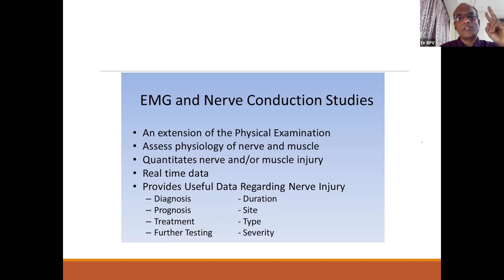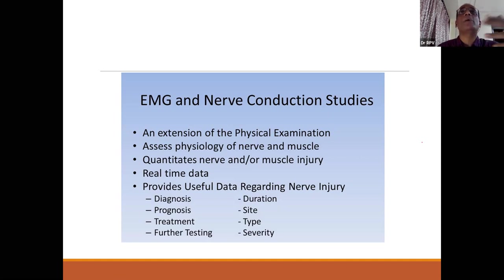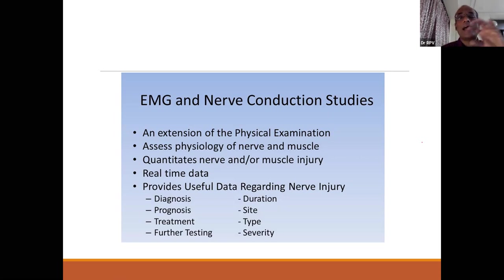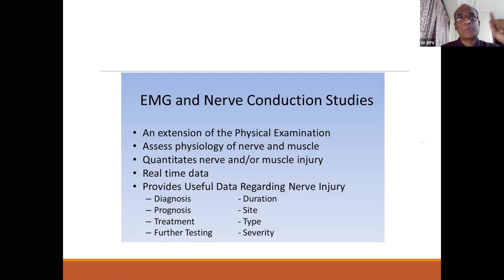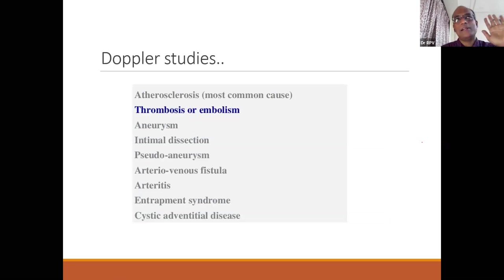Two important additional investigations: EMG nerve conduction study — especially in diabetics — not only prognosticates treatment but defines how much of the problem is long-standing diabetic neuropathy versus compressive radiculopathy. And Doppler studies because of the need to differentiate vascular claudication. You cannot afford to miss either.